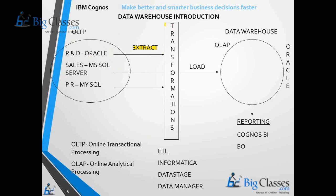Extract the data from the source system and place it in a temporary database called a staging database. Then apply transformations on top of the data. The number and type of transformations depends on the product being used. Transformations include cleansing, tuning, scrubbing, lookup, filter, aggregator, and others.